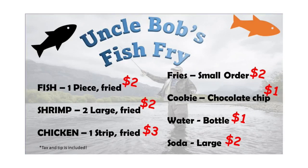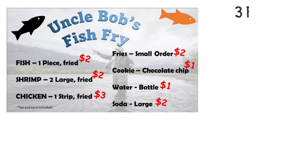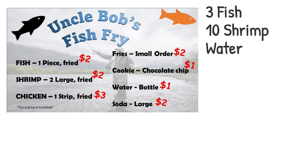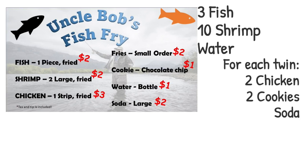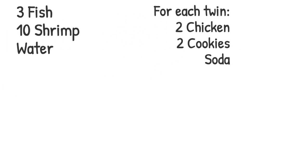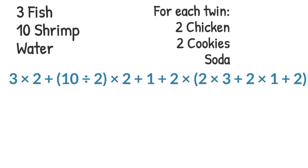What about this order? Renee orders 3 pieces of fish, 10 shrimp, and a bottle of water for herself. She has twins and orders the same for them, plus 2 chicken strips, 2 cookies, and a large soda. What is her total if the expression representing her order is shown?